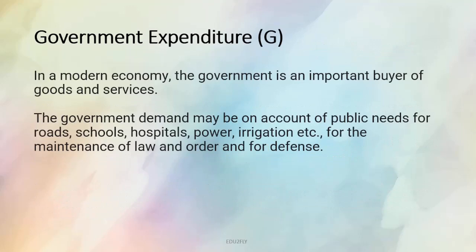Next is the government expenditure. In a modern economy, government is a very important buyer of goods and services. Government bhi bohot saari goods and services kharidti hai. Government kya kya demand kar sakti hai — public needs ke liye, jaise ki roads, schools, hospitals, power, irrigation etc., for the maintenance of law and order, and also for defense — government bohot saari weapons purchase karti hai. So yeh sab include hota hai government expenditure mein.